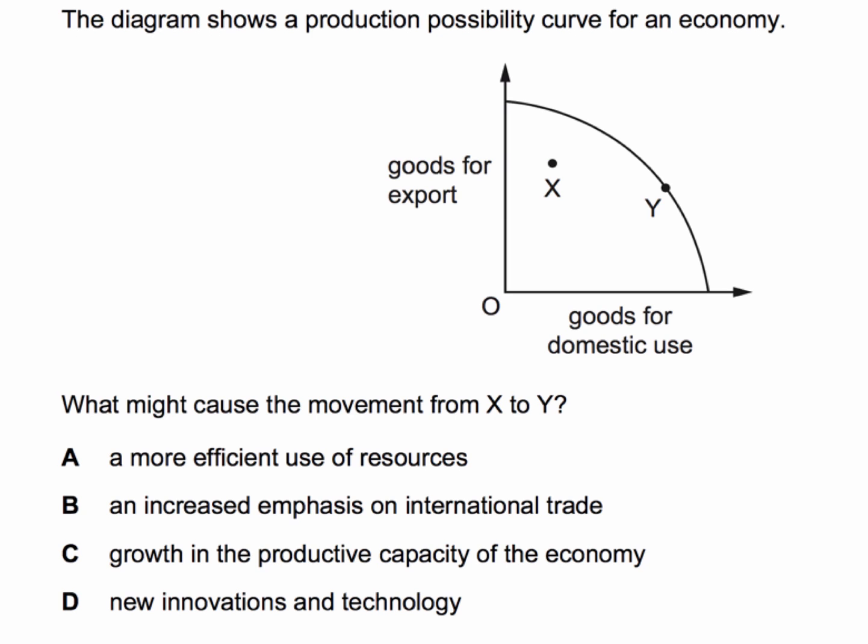The diagram shows a production possibility curve for a country. On the y-axis, we're looking at goods for export. On the x-axis, goods for domestic use. And the question is, what might cause the movement from x to y? This is the chance to press the pause button, have a go yourself — I'll be back in a few seconds with the right answer.